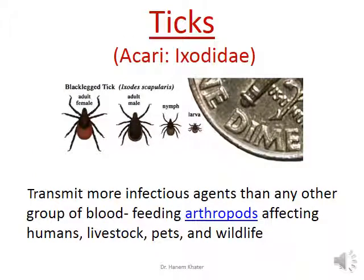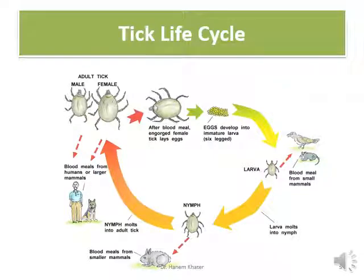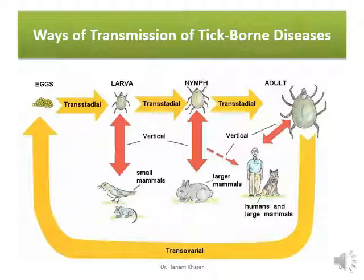Ticks transmit more infectious agents than any other group of blood-feeding arthropods affecting humans, livestock, pets, and wildlife. The life cycle of ticks starts with an engorged female that lays eggs, which hatch into larvae. Larvae molt into nymphs, and nymphs re-molt into adult male and female. Each developmental stage needs a blood meal. Transmission of tick-borne diseases includes trans-stadial transmission between stages or trans-ovarial transmission from engorged female to eggs.